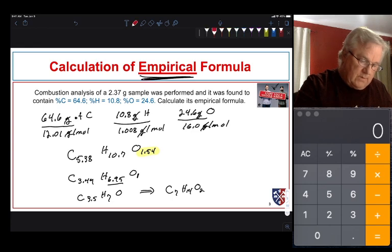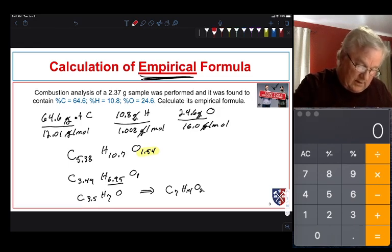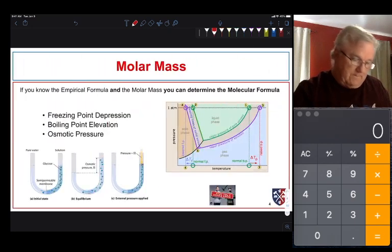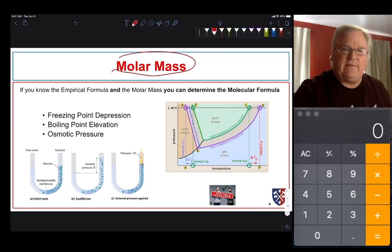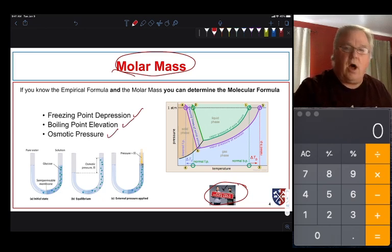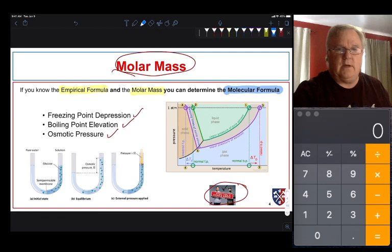Now that's our empirical formula. What we want to do for any kind of structure determination or to know what our molecule is, is a molecular formula. We can do that simply by figuring out the molar mass of our compound. We have different ways of doing that experiment. You'll remember from first year, this is stuff you should know. You could use freezing point depression, boiling point elevation, osmotic pressure. All of these would give you a molar mass. So once you have the empirical formula and the molar mass, you can use that to determine the molecular formula. So it's quite easy once you have the molecular formula.